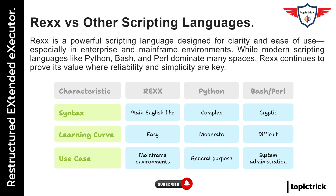Rex was designed with simplicity in mind. Unlike other scripting languages that often throw a lot of syntax and special characters your way, Rex is all about being readable and easy to learn, even for non-programmers. That's one of its biggest strengths. You can write scripts that are almost like plain English, which makes debugging and maintaining code a lot more straightforward.